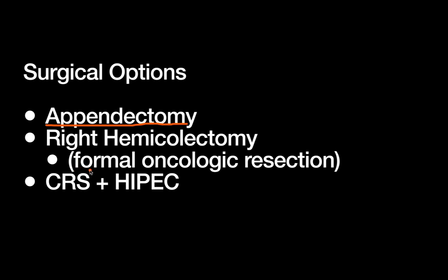For example, do we need to do what we often refer to as a formal oncologic resection, which just means a right hemicolectomy? What makes this a formal resection as opposed to the appendectomy is that you're sampling the lymph nodes when you do a hemicolectomy — you get a good amount of mesentery. And of course, we're always looking for those 12 lymph nodes to ensure we have an adequate lymph node dissection when we're doing a colon resection.